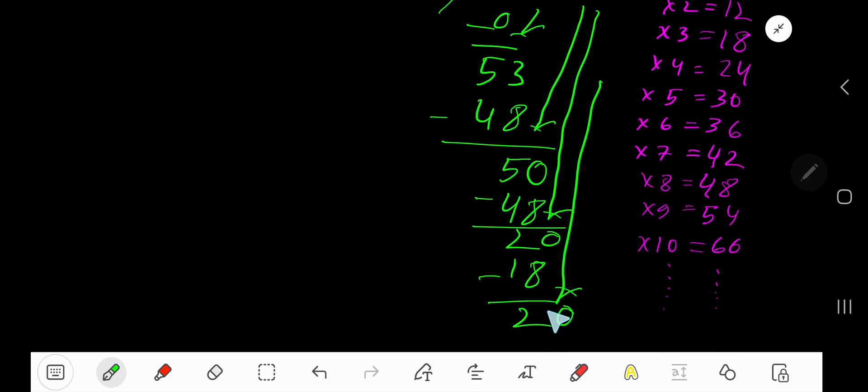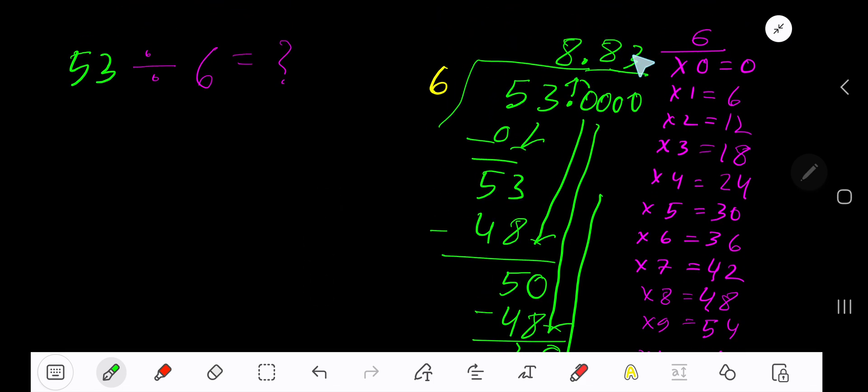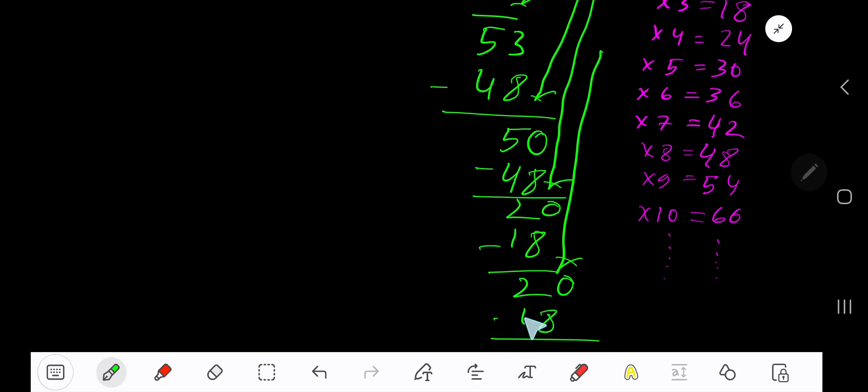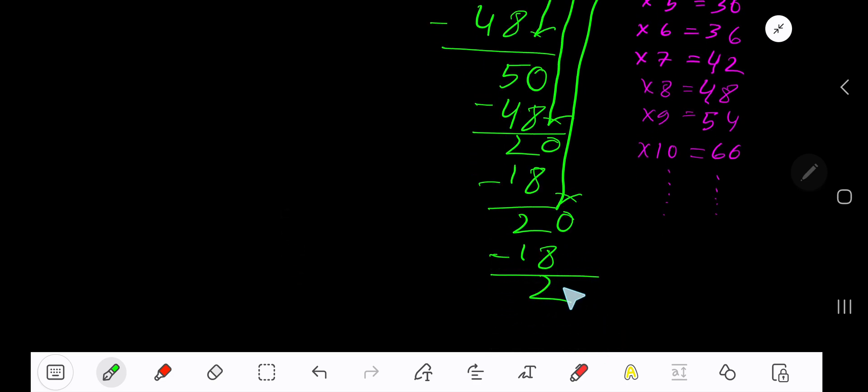Bring down another 0. 6 goes into 20 again. 3 times. 3 times 6, 18. Subtract. You are getting 2.